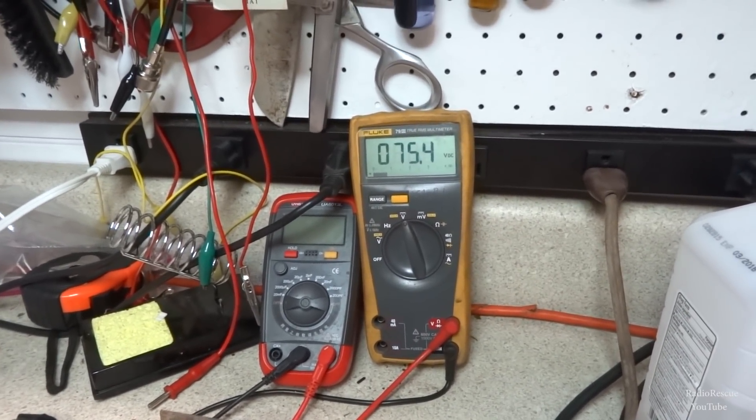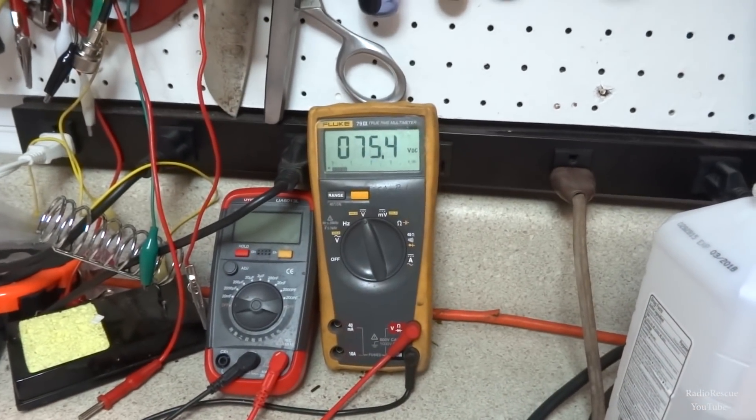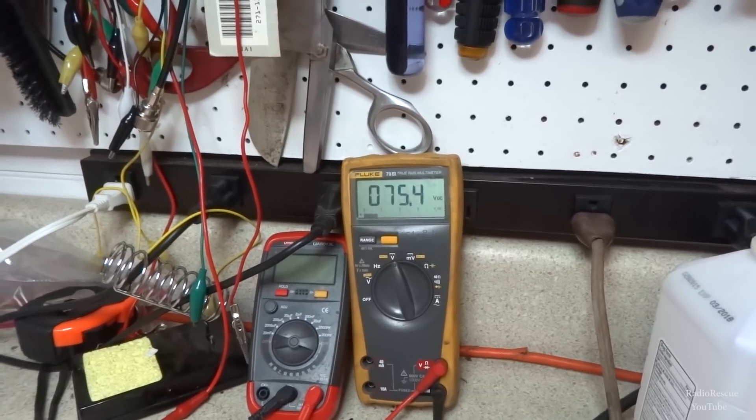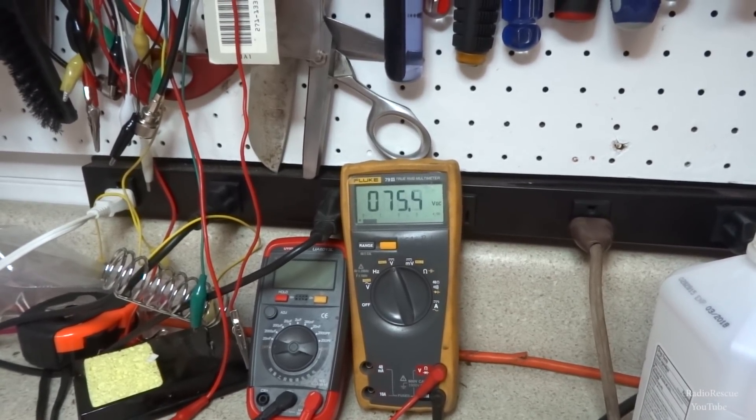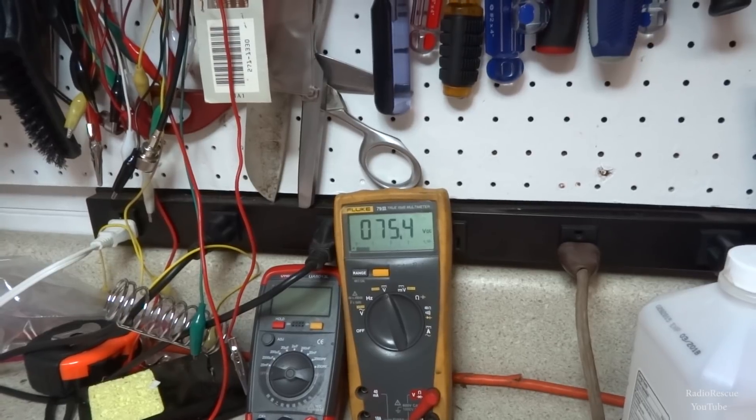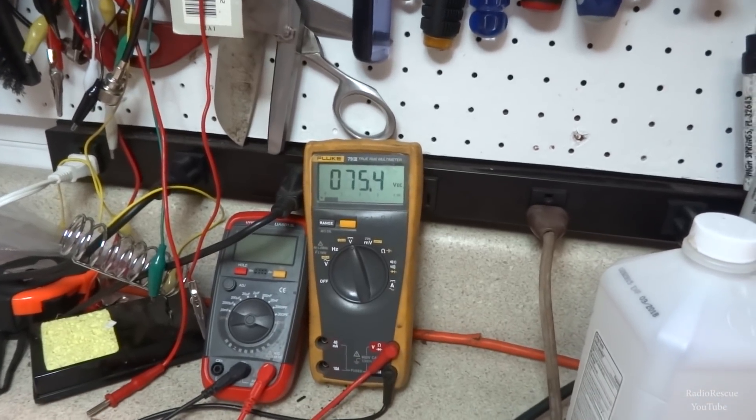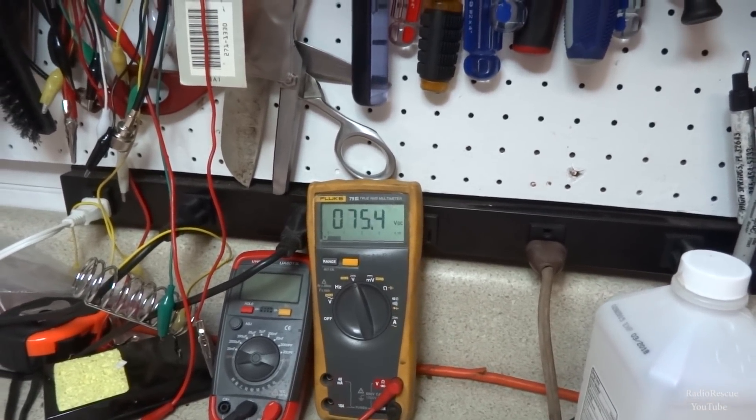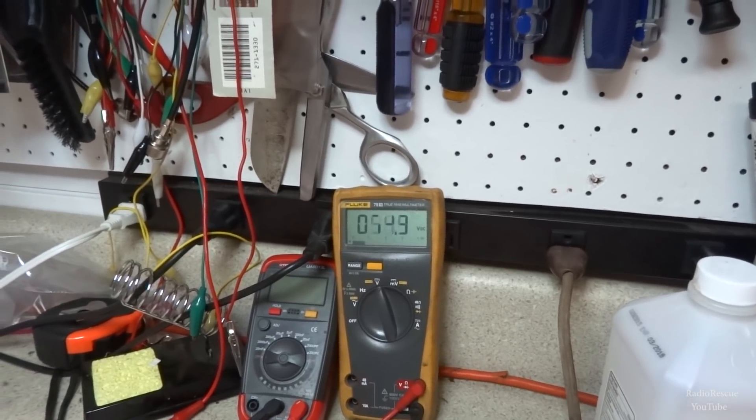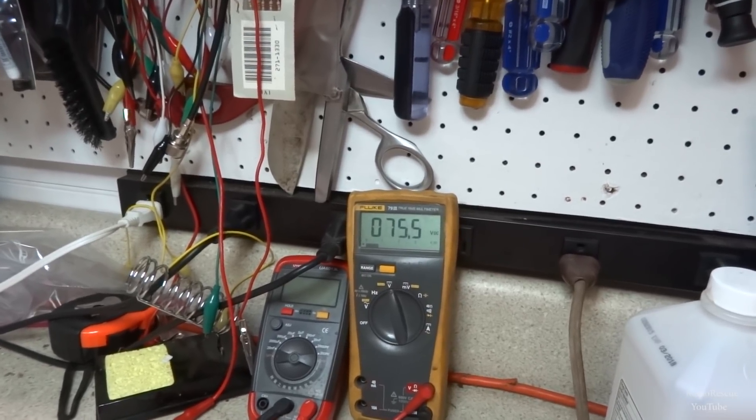Measuring our B+ on our plug here, getting about 75 volts. According to this output, I'm supposed to be getting about 128 volts at zero milliamps. I'd say that's definitely low. The lowest reading at 13 milliamps, I'm supposed to be getting 85 volts, so that's lower than the lowest voltage rating they've got on here. I'm willing to bet that selenium is probably weak.